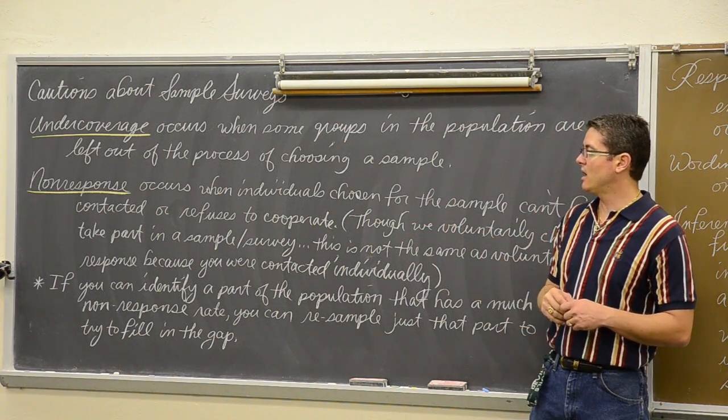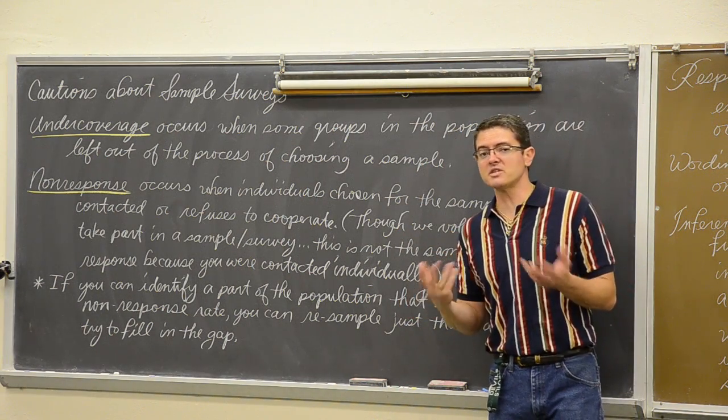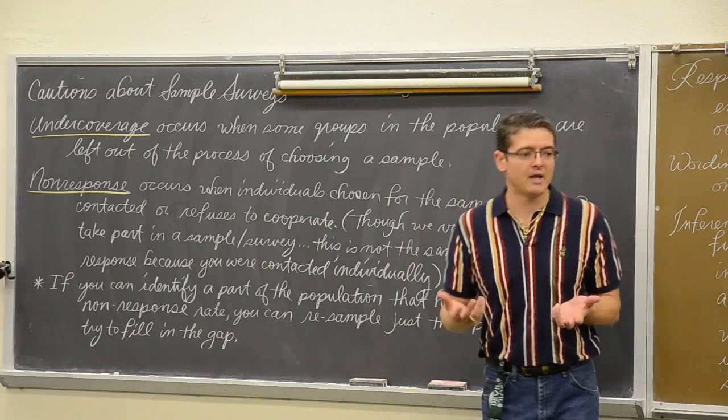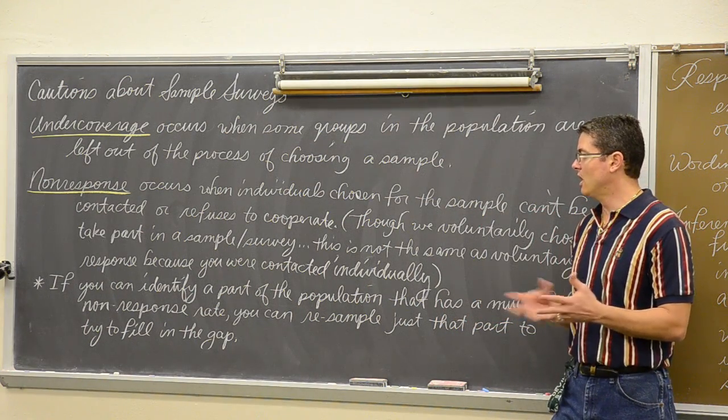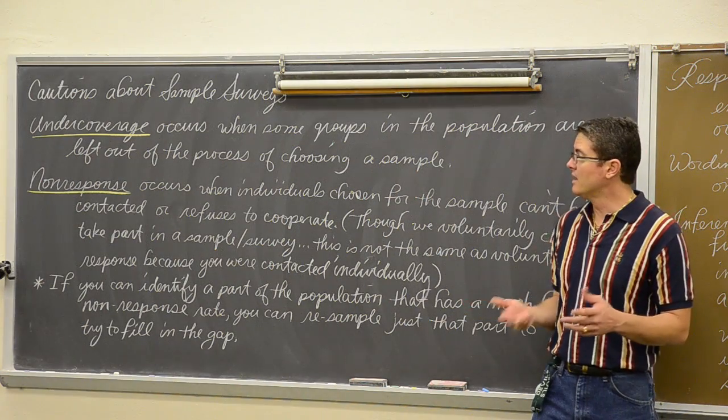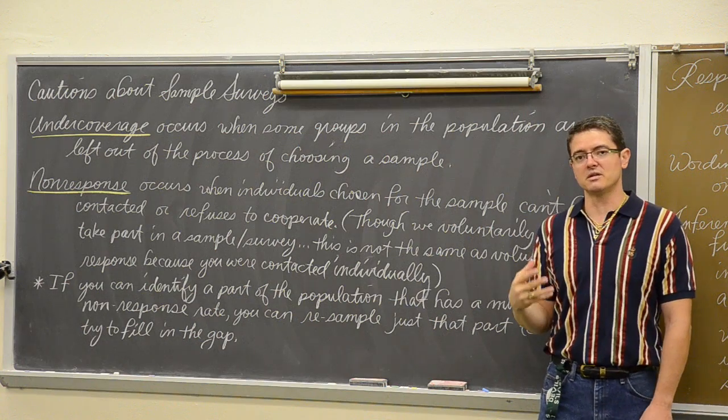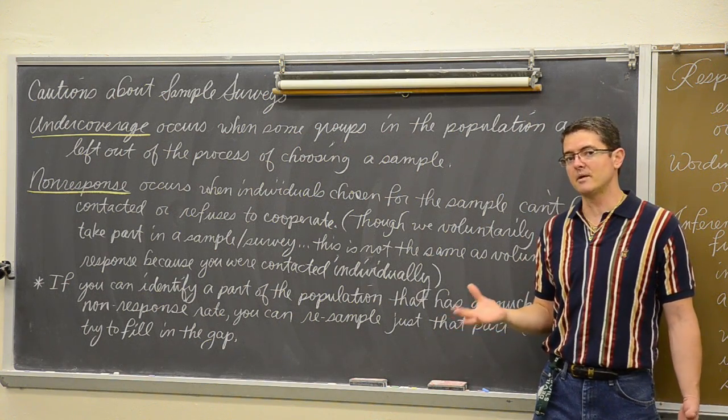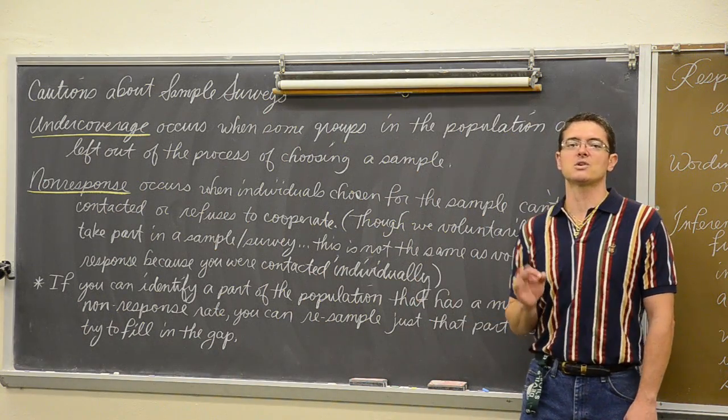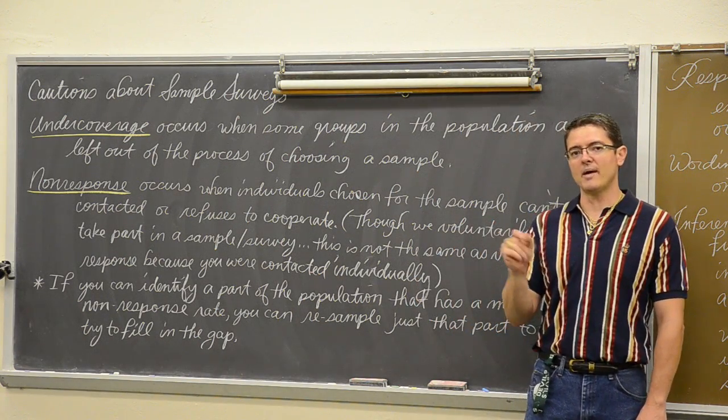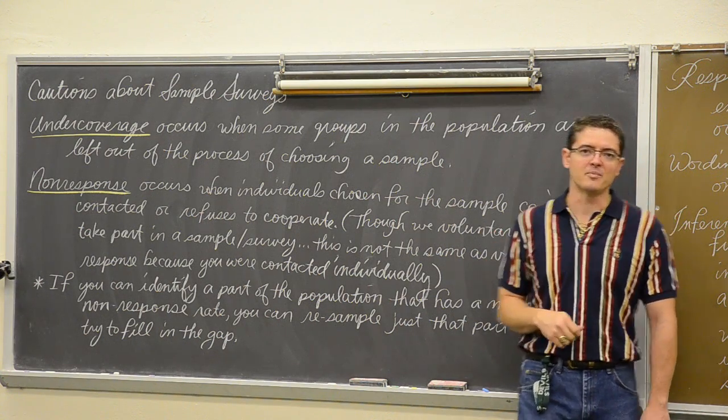So there are ways to sometimes deal with non-response. And then other times, there is always going to be non-response in every sample survey. It's just something we have to deal with and it can never be removed completely. So under-coverage, you leave people out. Non-response, those people are choosing to not respond. It is always going to happen, but if there is an area of your population, an area of your sample that has a much, much higher non-response rate, you are allowed to go back and do a small SRS to try and fill in that gap with just that part of the population.